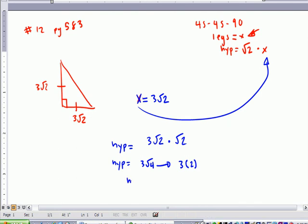And then the hypotenuse is equal to 6. Does that make sense, everybody? It's an easy one, right?